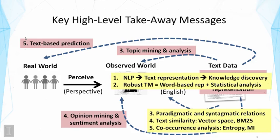The next point is about co-occurrence analysis of text. We introduced some information theory concepts such as entropy, conditional entropy, and mutual information. These are not only very useful for measuring the co-occurrences of words, they are also very useful for analyzing other kinds of data and for feature selection in text categorization as well.